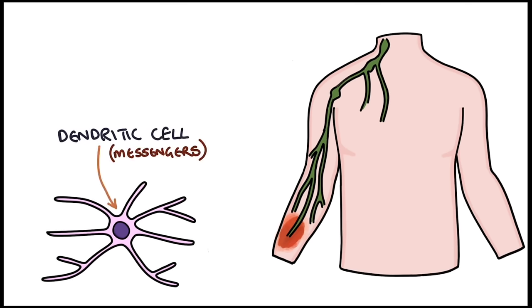These T helper cells also release cytokines that stimulate B cells to proliferate and differentiate into plasma cells that can release large quantities of antibodies, and memory B cells that hang around as part of the immune memory to respond quickly in future infections with that specific pathogen. The T helper cells also travel to areas of infection and secrete cytokines that help to recruit monocytes and macrophages to the infected tissue and activate the macrophages to cause inflammation and start the process of phagocytosis.